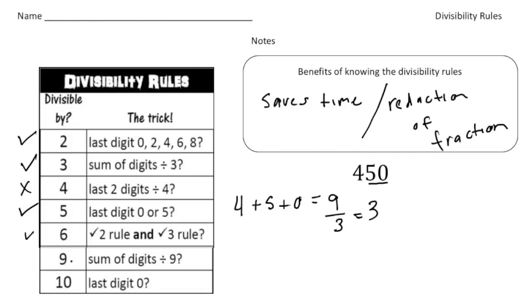The rule for number 9 is very similar to number 3, where you add up the digits, but the sum has to be divisible by 9. So 4 plus 5 plus 0 is 9. And 9 divided by 9 is 1, so it goes in evenly. So that means 9 is a factor as well. And then finally, the rule for 10 is if the last digit is a 0. So for 450 is a 0, so that means 10 is also a factor.